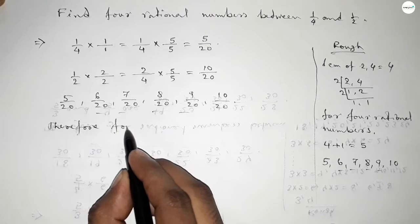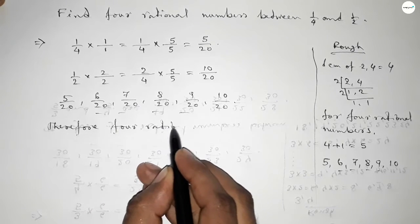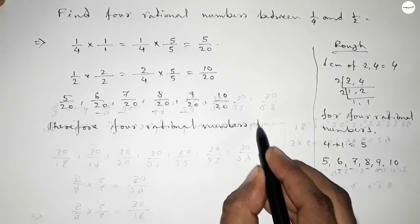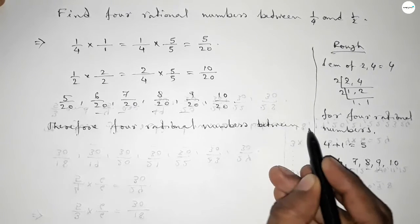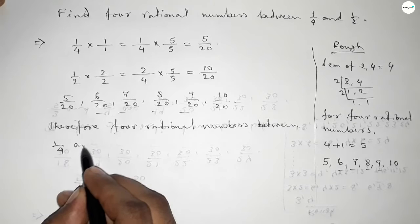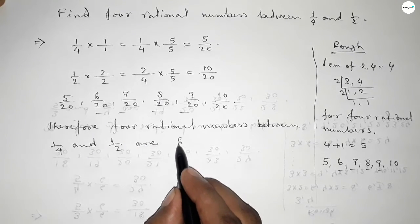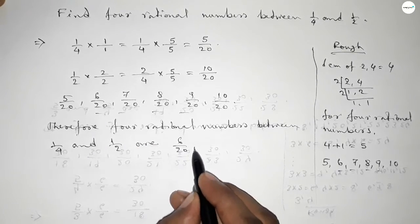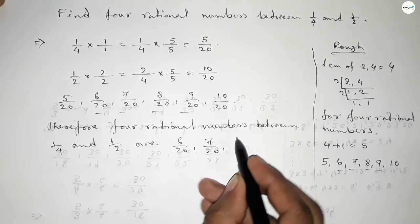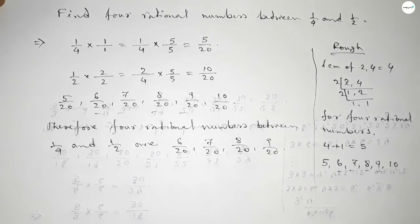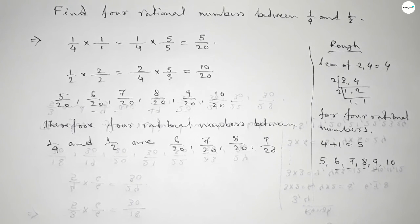Among these, the required four rational numbers between one over four and one over two are: six over twenty, seven over twenty, eight over twenty, and nine over twenty. So this is the process to find four rational numbers between one over four and one over two.